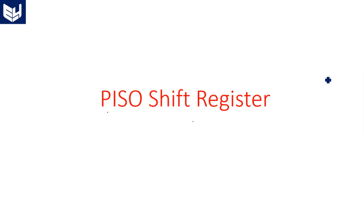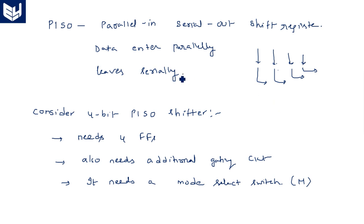Hi everyone. In this video I am going to explain the parallel in serial out shift register VHDL code. In the last video we started the introduction of this parallel in serial out shift register — how the data is being shifted. Data enters parallelly and leaves the shift register serially.